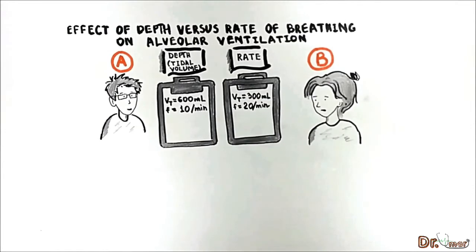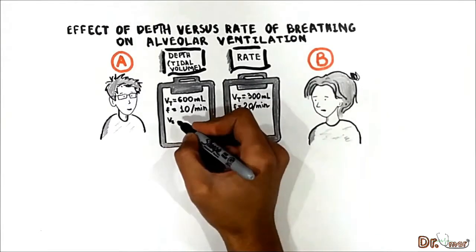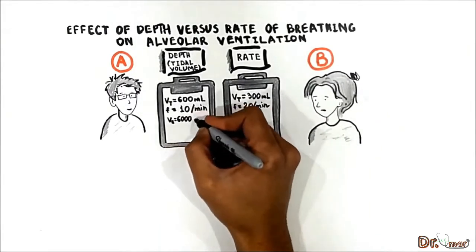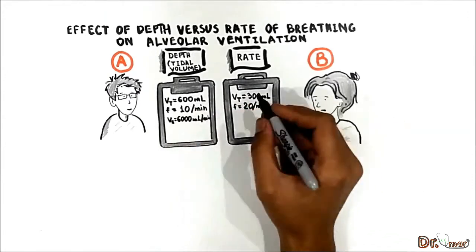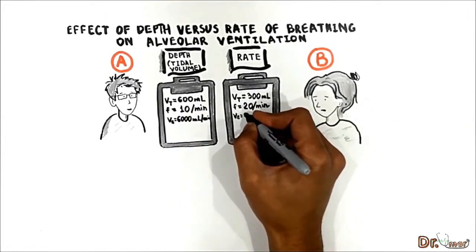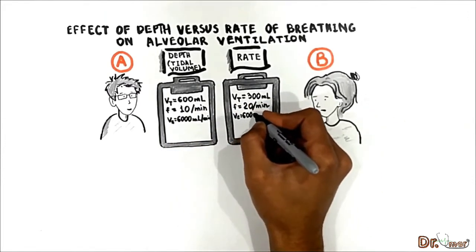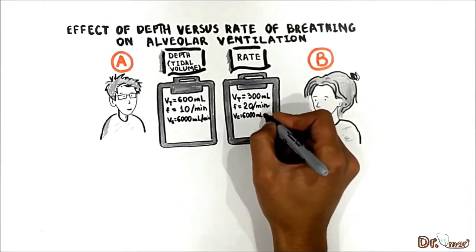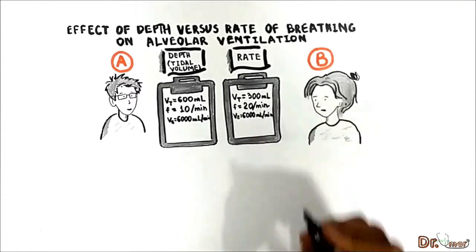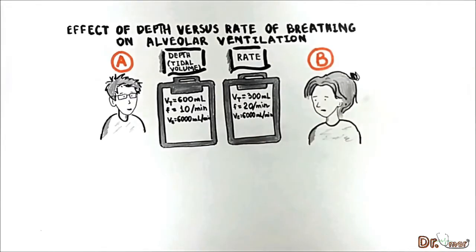600 times 10 equals 6,000, and 300 times 20 also equals 6,000 mL per minute. The question is: which patient has the greater alveolar ventilation?